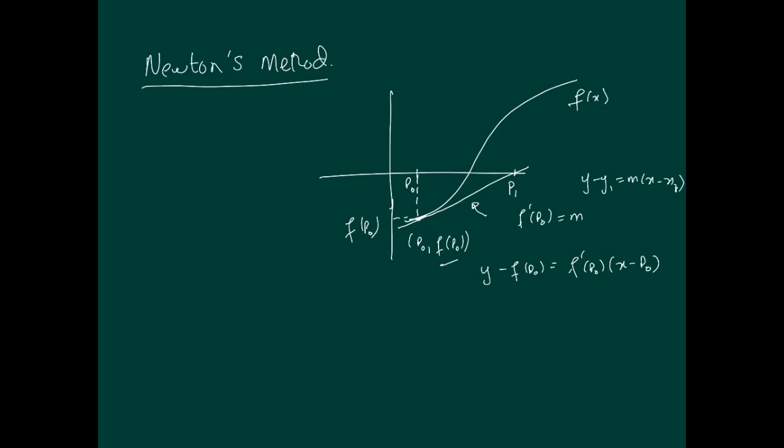If we go to this point here, its coordinates are P1, 0. If I substitute this into this equation of the tangent line, because it's supposed to be on this line as well, then let's see what relationship occurs. y is 0, so I'll have negative f(P0) equals f'(P0) times P1 minus P0. From this, we can get a relationship between P1 and P0, and it turns out that P1, by rearranging, is P0 minus f(P0) divided by f'(P0).